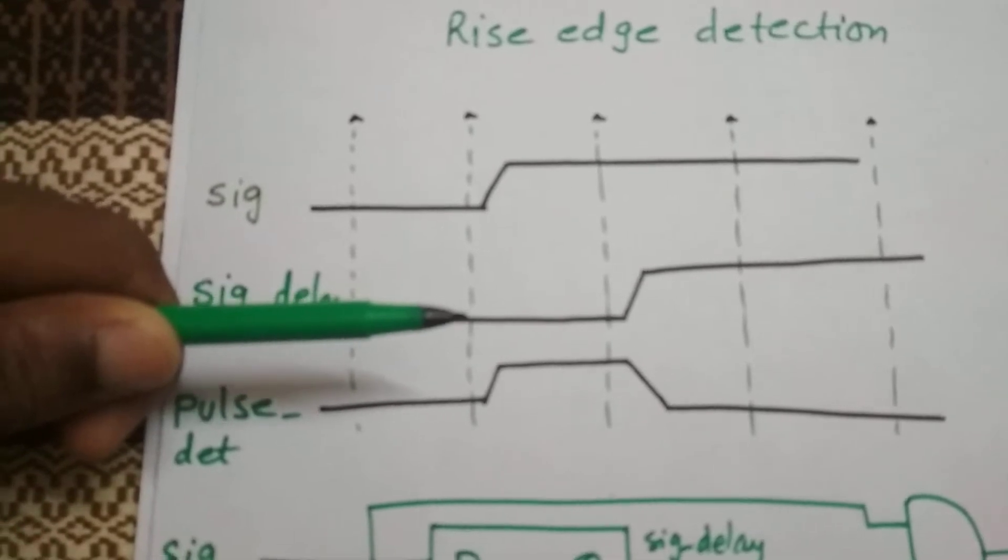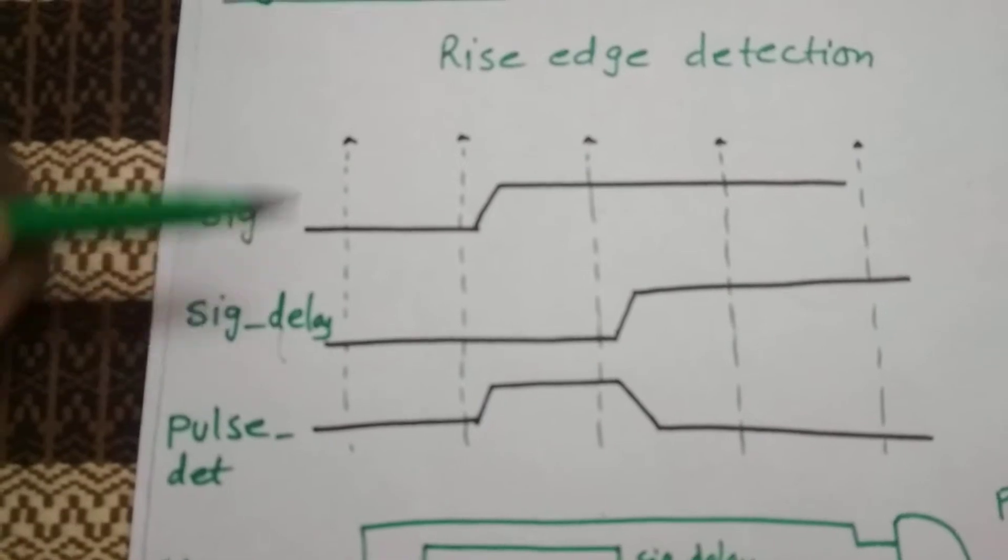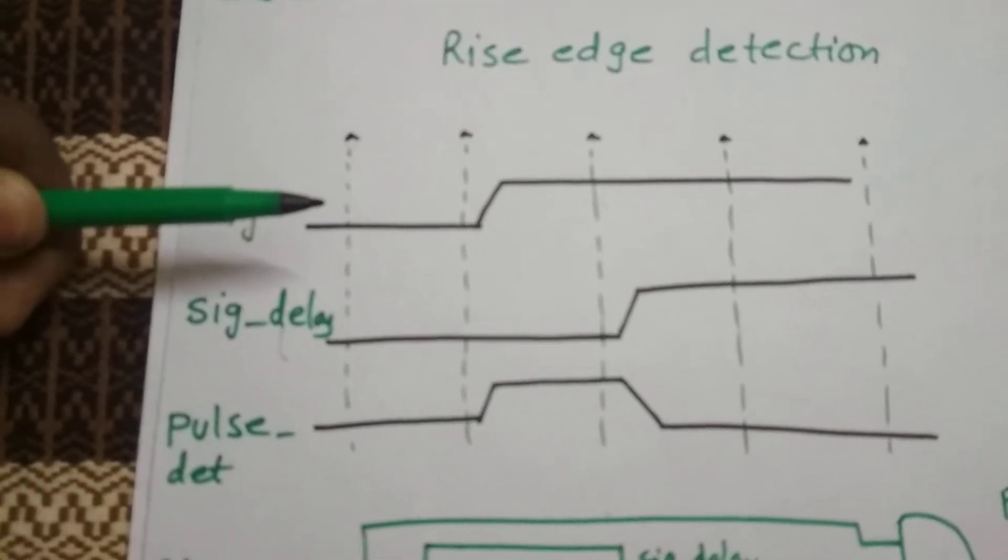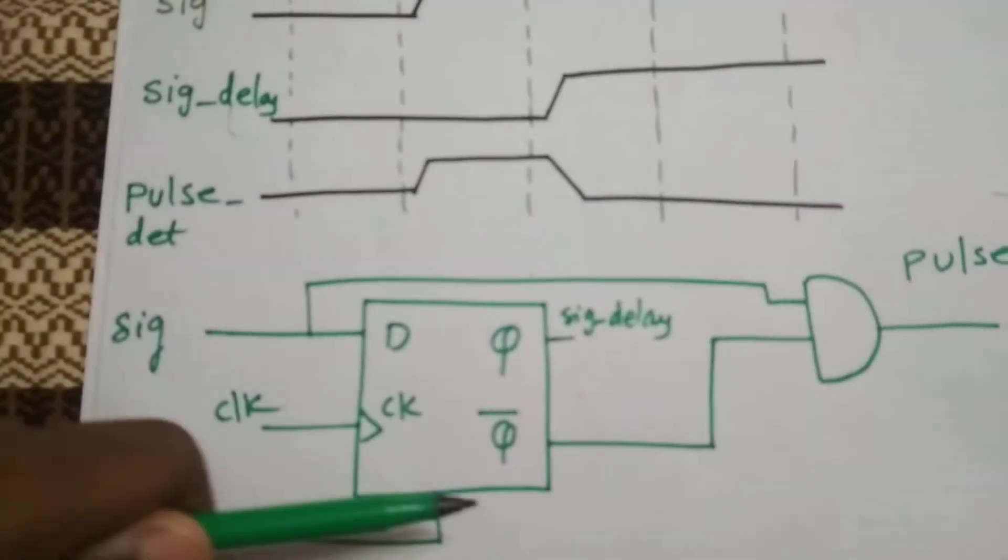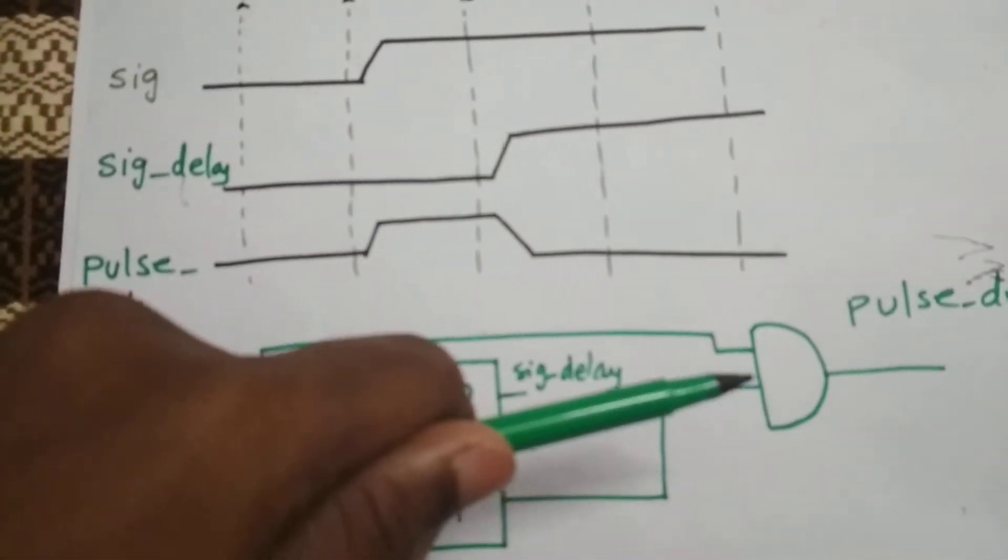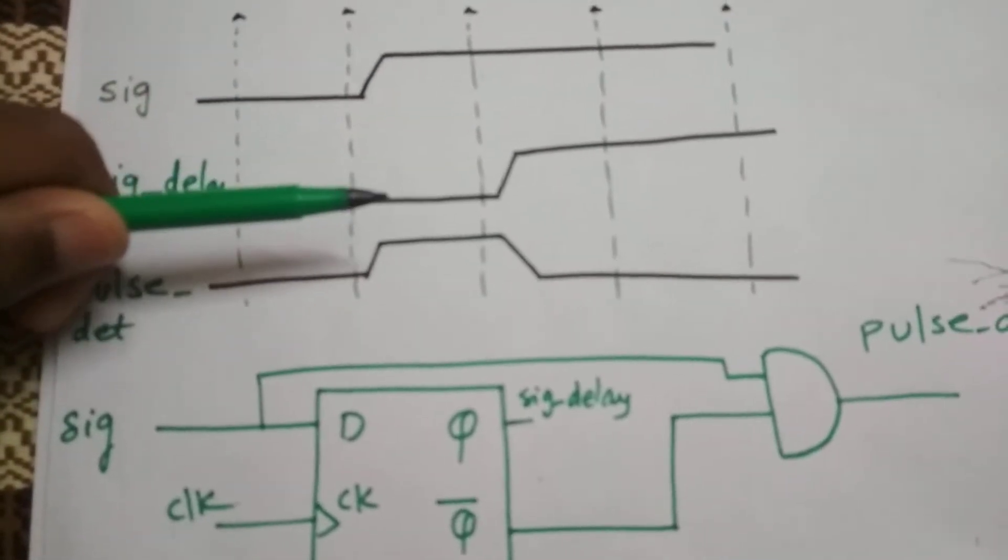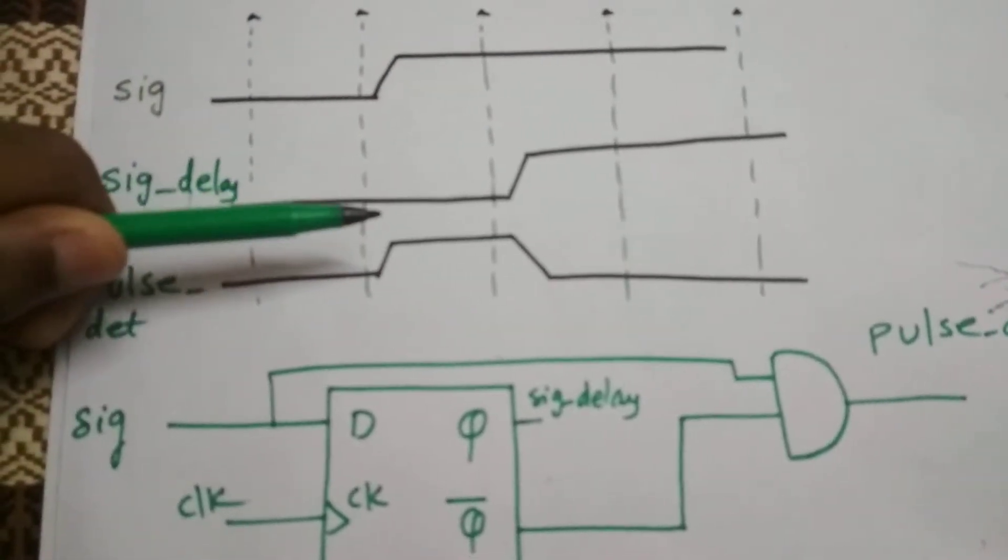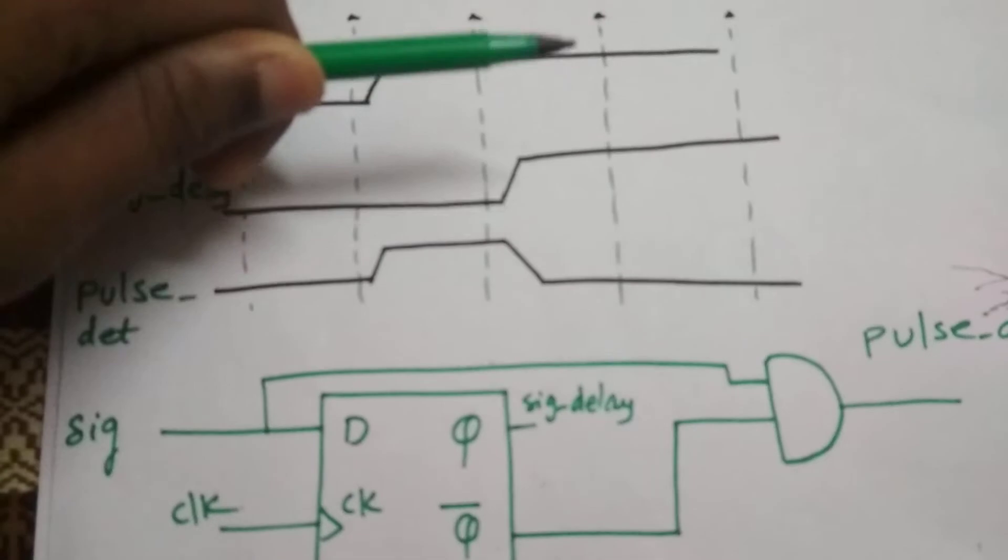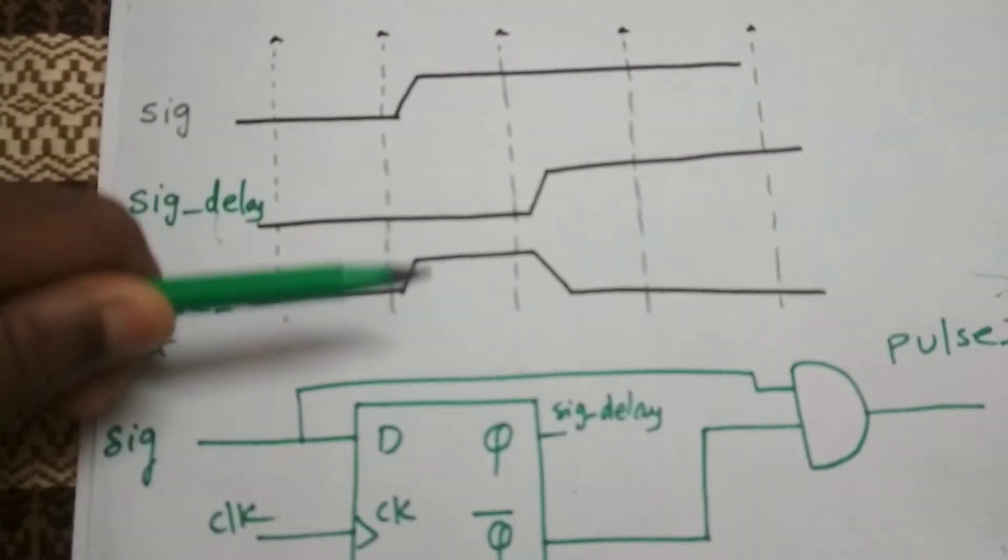I'm going to complement this signal. I'm going to complement signal delay and AND it with the signal which I just passed through the flop. So as you can see it is one, it is also one because we are seeing the complement and then ANDing it. So it's zero, it is one and it's zero, it's zero. So we are getting a pulse.